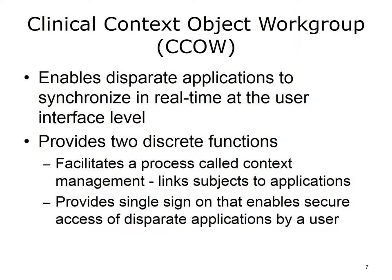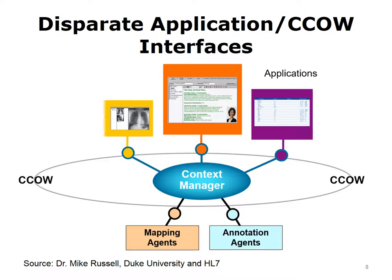CCOW products define standards that enable the visual integration of healthcare applications, entailing the coordination and synchronization of applications so that they are mutually aware of a set of common things (e.g., patient ID, patient name, encounter date), and define a protocol for securely linking applications to a common concept. The application tells the CCOW-compliant Context Manager that it wants to set the patient context and provides an identifier indicating the context subject, such as the medical record number. The context manager then notifies other applications that the context has changed, and each application obtains the patient's identifier and adjusts its internal state and data display accordingly. This all happens in real time. The current version of CCOW is version 1.6.